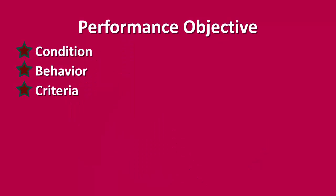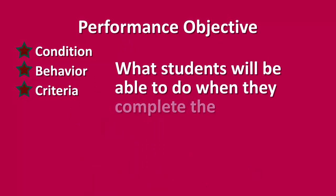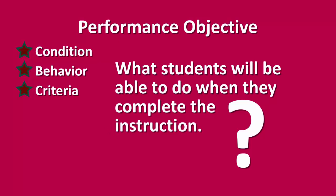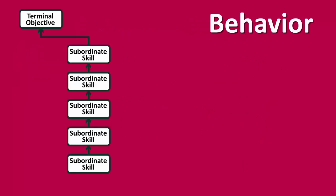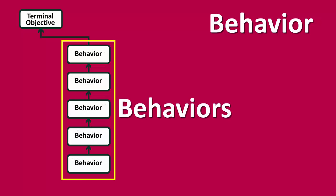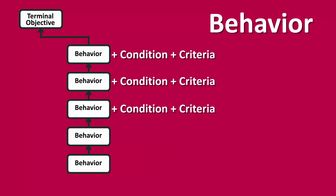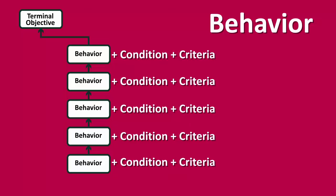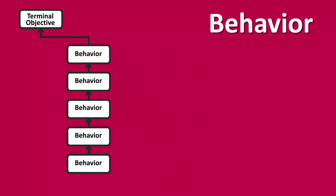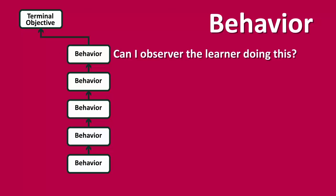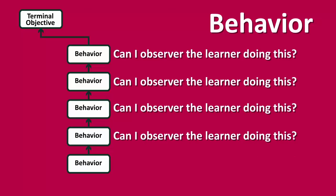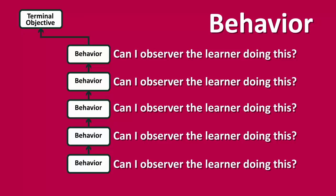A performance objective clearly defines what students will be able to do when they complete the instruction. During the analysis phase, you've identified the subordinate skills along the way to your goal — these are behaviors. Now your task in the design phase is to add a condition and an assessment to the behavior. You need to ask yourself: can I observe the learner doing this? If the answer is yes, which is often easy for psychomotor skills, then you're going to provide conditions and criteria for the behavior.